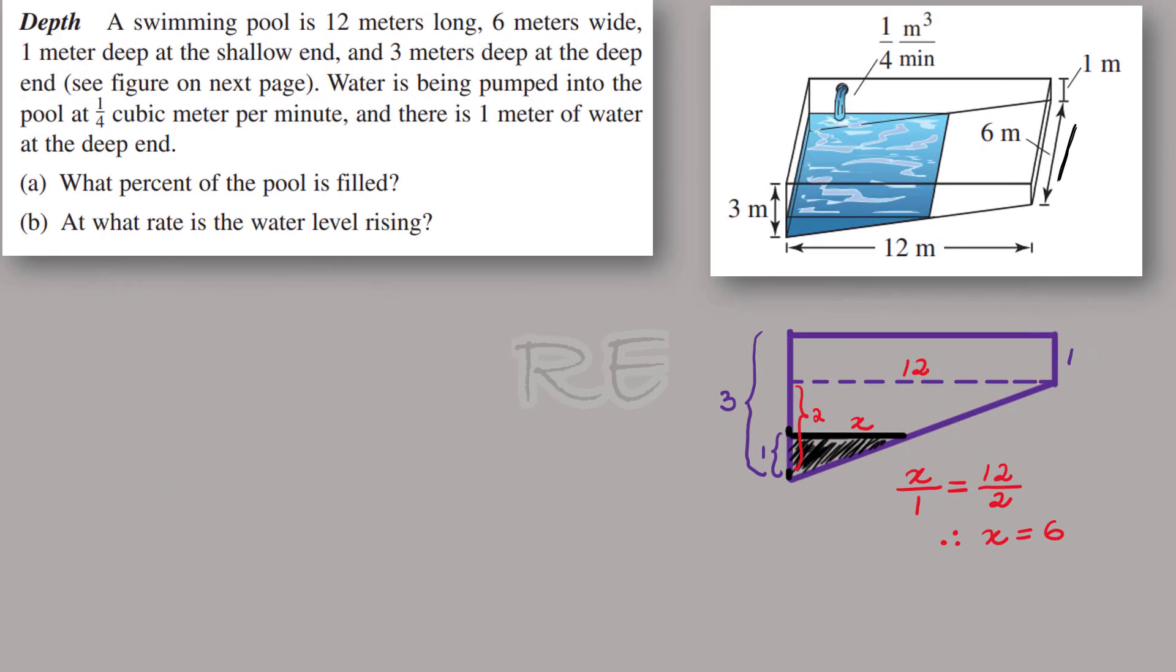We want the rate at which the water level is rising, which is dh/dt. It's the linear measurement of the height of the water, given that dv/dt is equal to one-fourth cubic meter per minute.